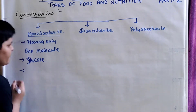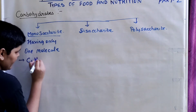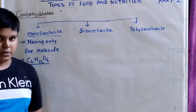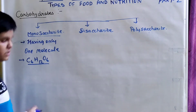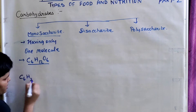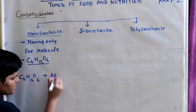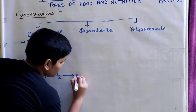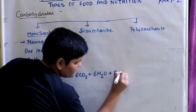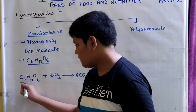Glucose is an example of a monosaccharide. The formula for glucose is C6H12O6. This formula represents glucose. But how does glucose give us energy? To find out, you need to understand this formula.